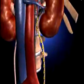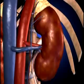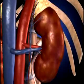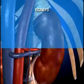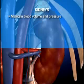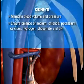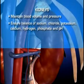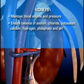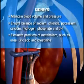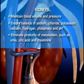The kidneys also selectively reabsorb those substances that are needed to maintain the normal composition of the blood. By adjusting blood composition, the kidneys are able to maintain blood volume and pressure, ensure the proper balance of sodium, chloride, potassium, calcium, hydrogen, phosphate, and pH, and eliminate products of metabolism such as urea, uric acid, and creatinine.